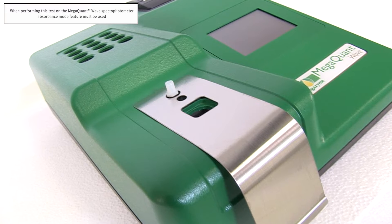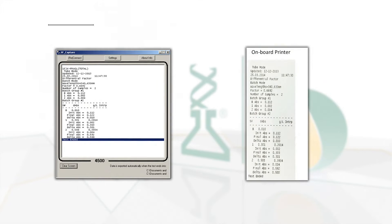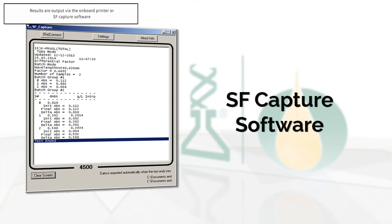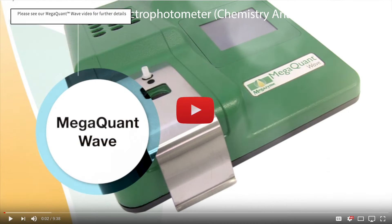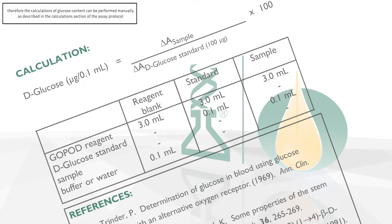When performing this test on the MegaQuant Wave spectrophotometer, the absorbance mode feature must be used. The results will be printed via the onboard printer or the data can be exported to a computer using the SF capture software. Please see your MegaQuant Wave video for further details. The absorbance readings of the samples, blanks and standards are used to calculate the D-glucose content in the test samples. In absorbance mode the results output are raw absorbance values for both blank and samples, therefore the calculations of glucose content can be performed manually as described in the calculation section of the assay protocol.